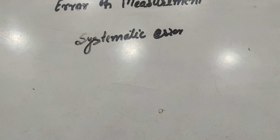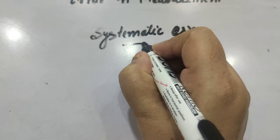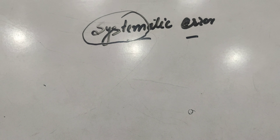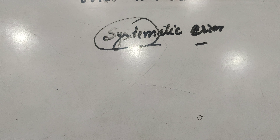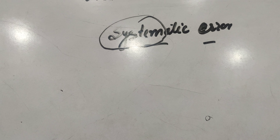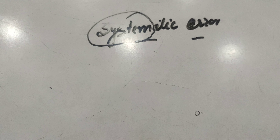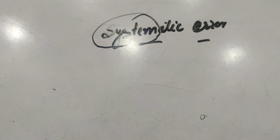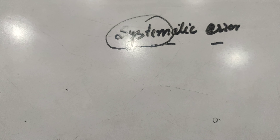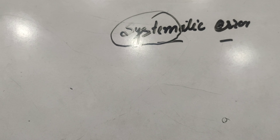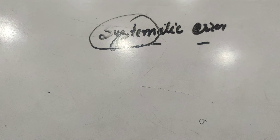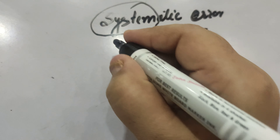Let us now discuss the first kind of error, which is systematic error. As the name explains, this is the error which could be due to the system. It could be due to the instrument chosen, or due to the wrong technique used by the observer, or wrong observations taken by the observer, and many more things related to the system of the experiment to be performed.